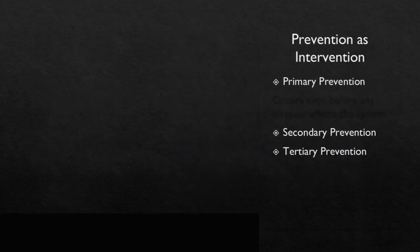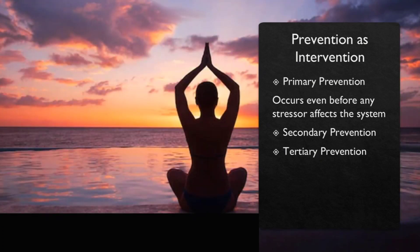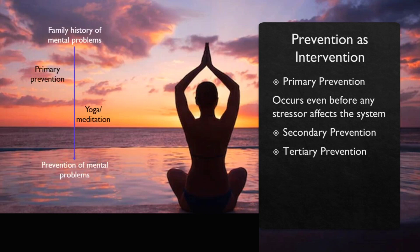Next is prevention as intervention. It can be of three types: primary, secondary, and tertiary. Primary prevention occurs even before any stressor affects the system. It focuses on strengthening the flexible line of defense through preventing stress and reducing risk factors. For example, the yoga and meditation routine which I follow — suppose I have a family history of mental problems, so I do all these things even before I have any kind of mental problem in order to prevent it. That is primary prevention.